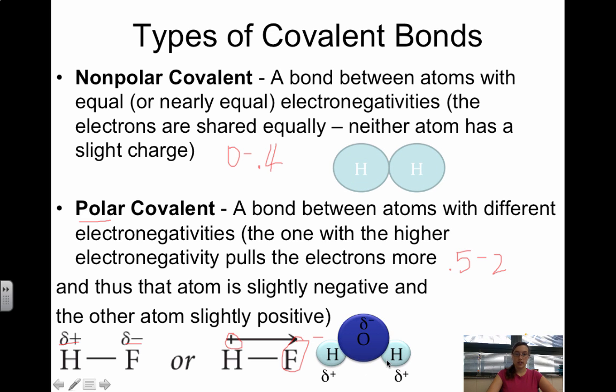Another example is water. Oxygen is more electronegative than hydrogen. Oxygen is going to pull its electrons toward it, making it partially negative, leaving hydrogen partially positive.